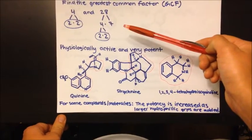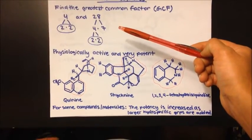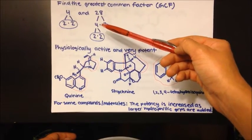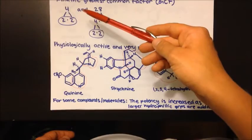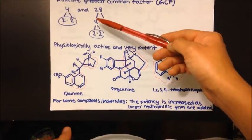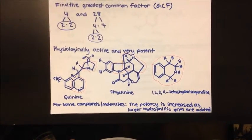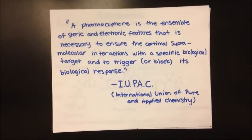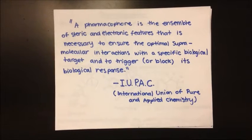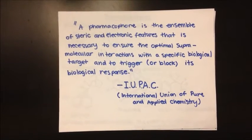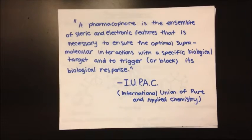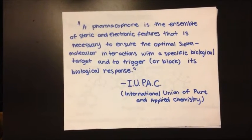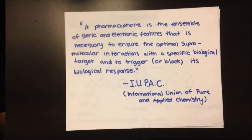If we were to look at this through the biochemical lens, we could say that 4 and 28 are pharmacophores because they have the feature 4 in common. The IUPAC definition of a pharmacophore is as follows: a pharmacophore is the ensemble of steric and electronic features that is necessary to ensure the optimal supramolecular interactions with a specific biological target and to trigger or block its biological response.